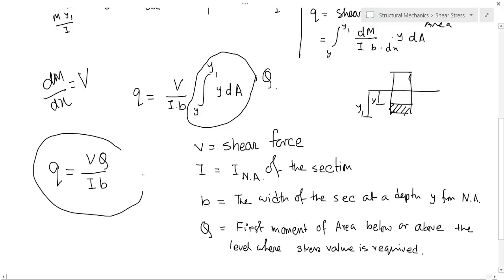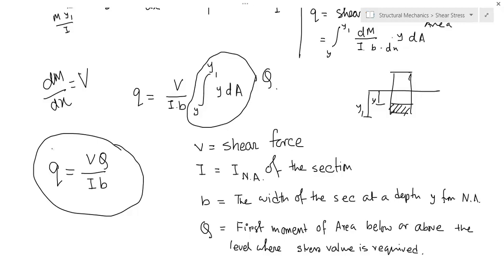So we have derived the formula for shear stress of a beam: q = VQ / IB. In the next video, I will do an example of shear stress determination of a beam with a rectangular cross-section, and also show how to draw the shear stress distribution along a cross-section for rectangular, circular, I-shape, and T-shape beams.